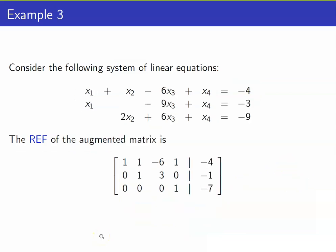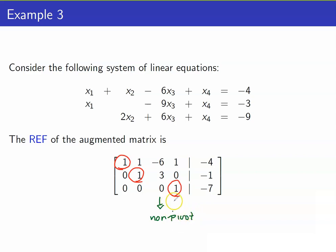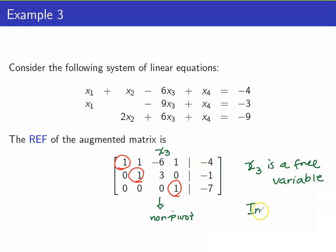Another system of linear equations to consider: the RREF of the augmented matrix shows leading entries of 1, 1, and 1. The third column is a non-pivot column. Therefore, we have a free variable corresponding to x₃. Since x₃ is a free variable, it can be any real number, and therefore this system has infinitely many solutions.